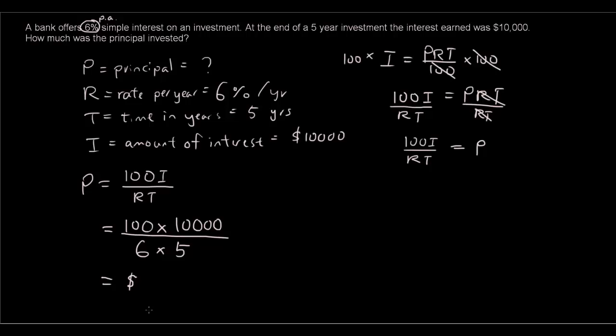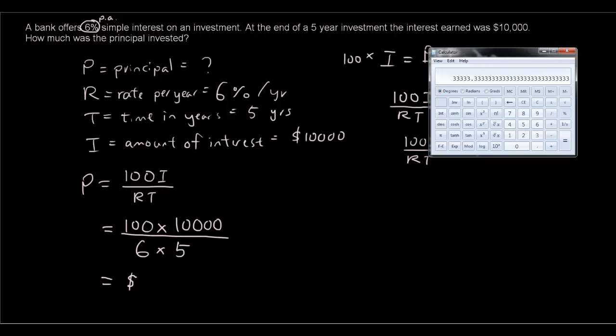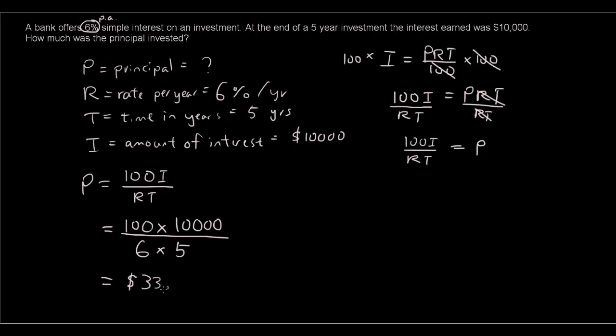And the answer is $33,033. So isn't that amazing? If you save $33,000 approximately into the bank for 5 years, in a 5 year period you can earn another $10,000. So that's why you should make sure that you don't spend your money on things that you don't need. Because if you invested, you can get a lot more money.